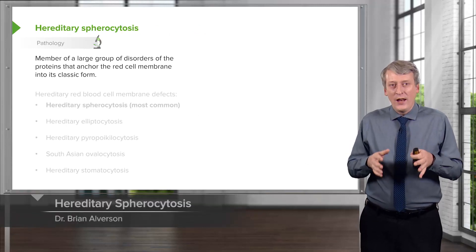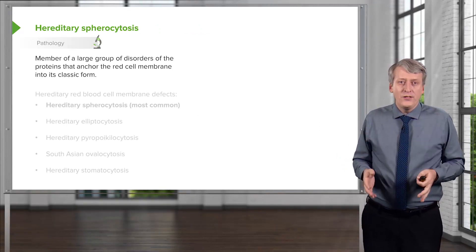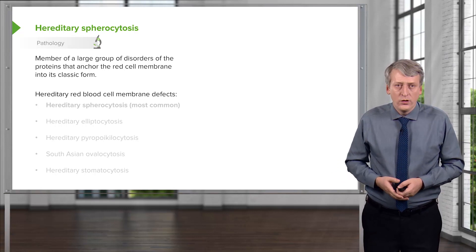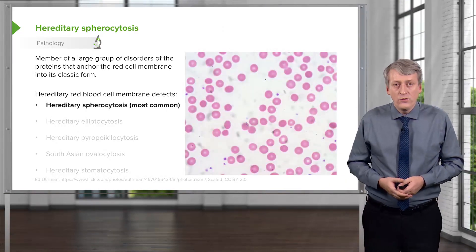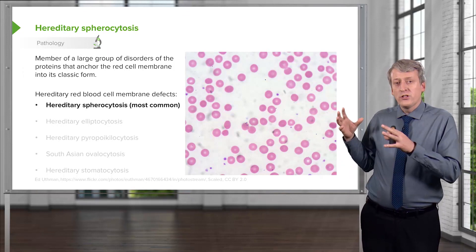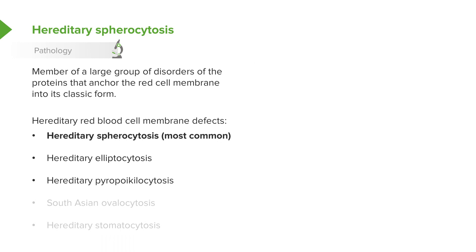Let's move on to hereditary spherocytosis. This is a disorder in a family of disorders where the problem is the proteins that anchor the red cell membrane into its classic form. There are many different types: hereditary spherocytosis is the most common, where cells don't have their classic pattern — they are small spheres. You can also get hereditary elliptocytosis, hereditary pyropoikilocytosis, South Asian ovalocytosis, or hereditary stomatocytosis. All involve proteins on the outer surface of the cell.